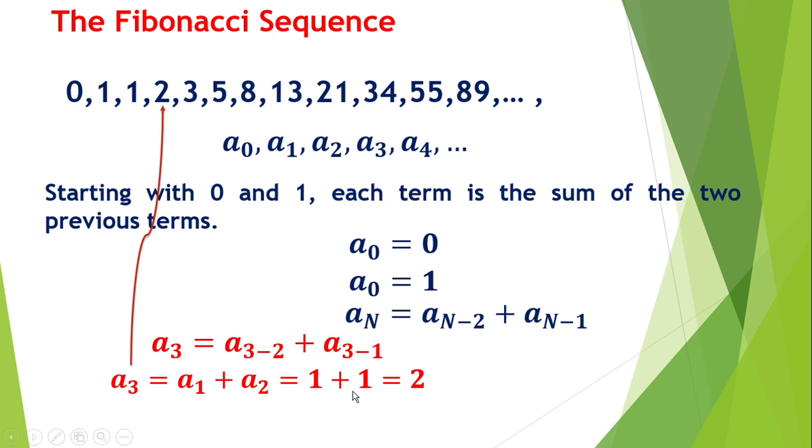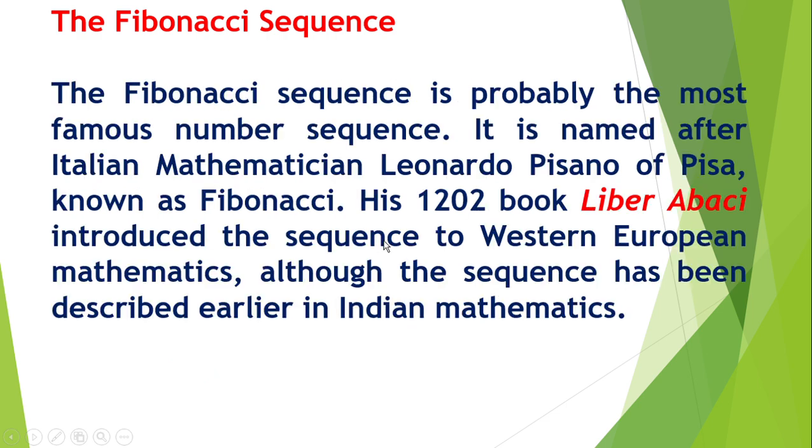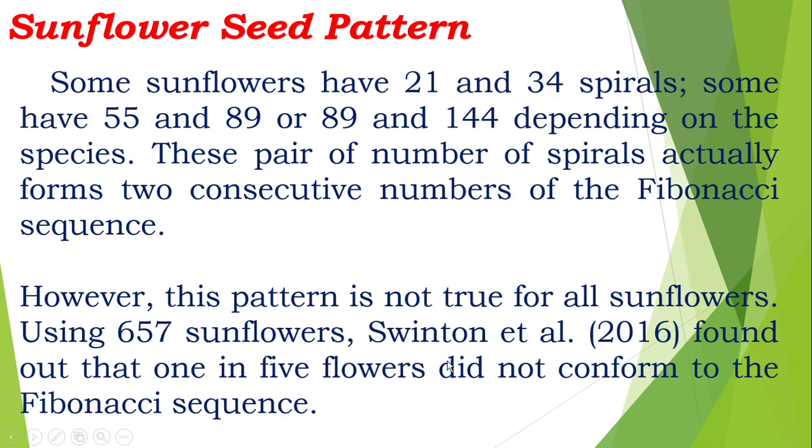The Fibonacci sequence is probably the most famous number sequence. It is named after the Italian mathematician Leonardo Pisano of Pisa, known as Fibonacci. His book Liber Abaci introduced the sequence to Western European mathematics, although the sequence had been described earlier in Indian mathematics.